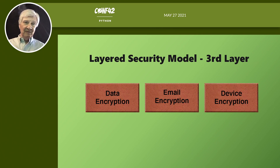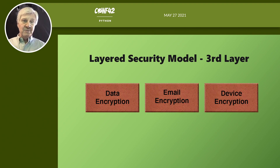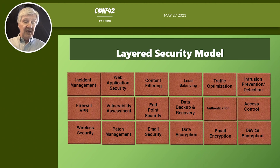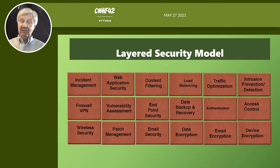The third layer in any model is encryption. The second word on every one of these bricks — the bricks in the wall of your castle — is encryption. You want data encryption, email encryption, and device encryption where practical. That's your third and center layer, and together these layers create the complete layered security model — one wall of the entire castle — that gives you what you need for cybersecurity today.